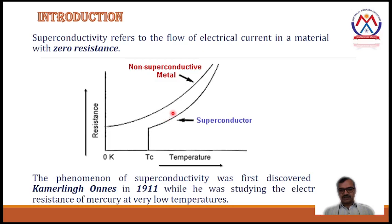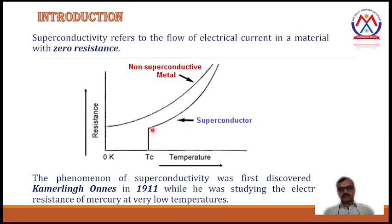Whereas in the case of the superconductor, as you can see, with a decrease in temperature, at a certain temperature the resistivity is decreasing gradually, but at this point the resistance suddenly drops to zero. That means the material is showing zero resistance at this point and it becomes a superconductor at this temperature.